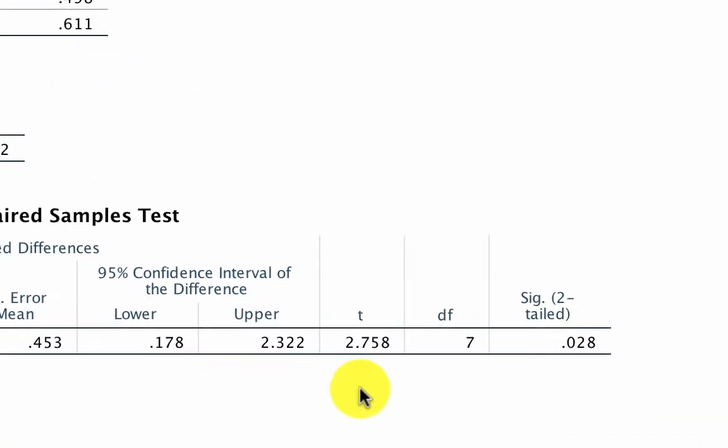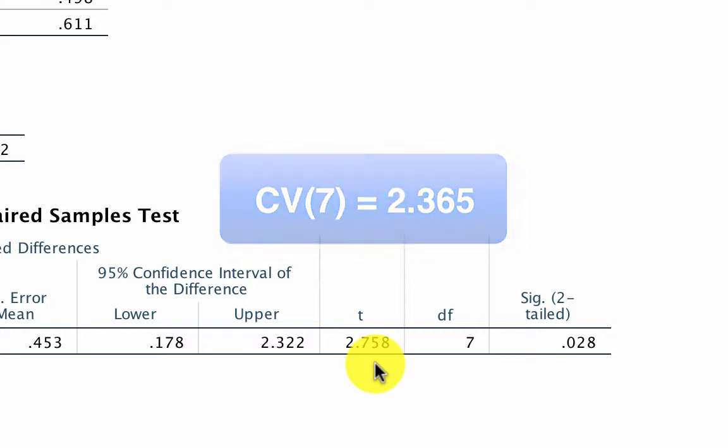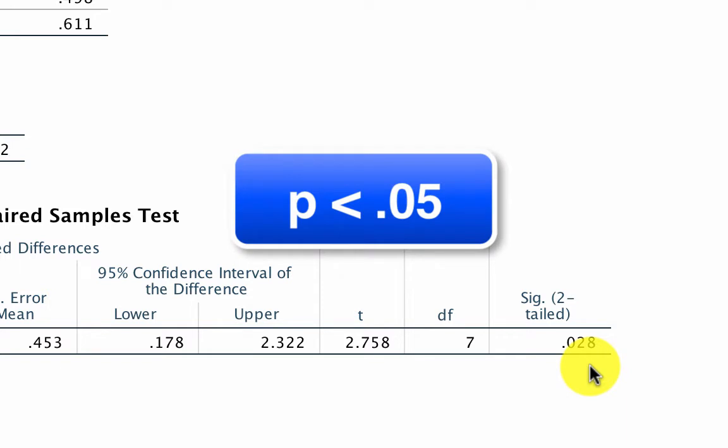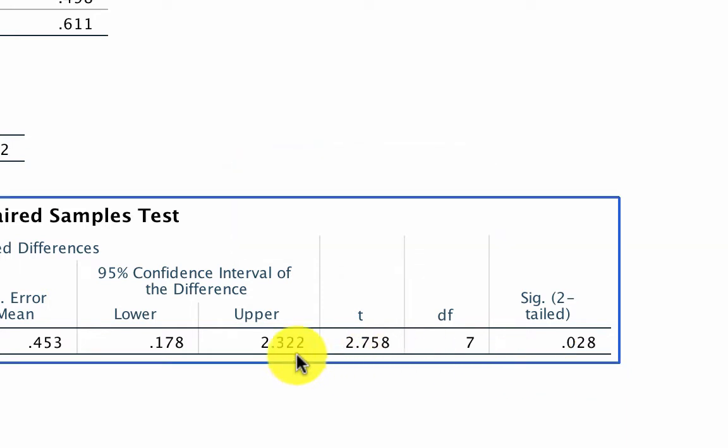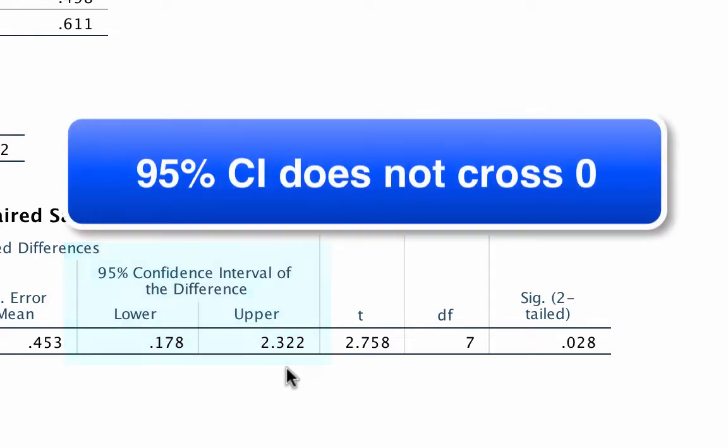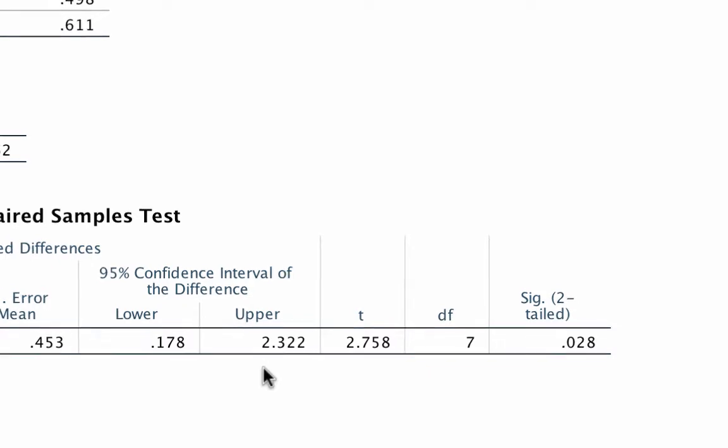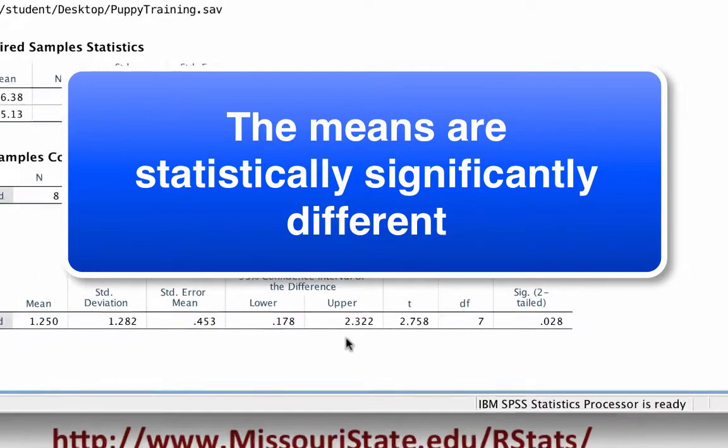So this mean is the mean of the paired differences. This is the standard deviation of the paired differences, the standard error of the paired differences, and so on. If you subtract the food mean from the clicker mean, the difference between these two means would be 1.25. First, the t-test value is 2.758, which exceeds the critical value of 2.365. Degrees of freedom is 7. We can see that the significance value for the t-test is 0.028, which is less than 0.05. We also see the 95% confidence interval for the difference between paired sample means shows a lower bound of positive 1.78 and an upper bound of 2.322. Because this confidence interval does not cross 0, it does not include the null hypothesis value of 0 difference. All three of these findings tell us the same thing. There is a statistically significant difference between these two means.